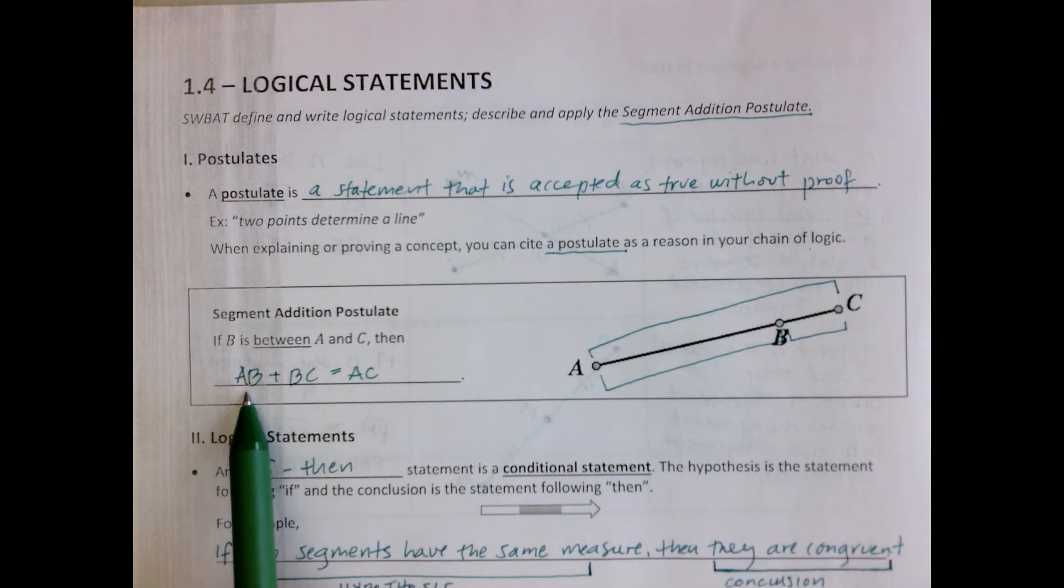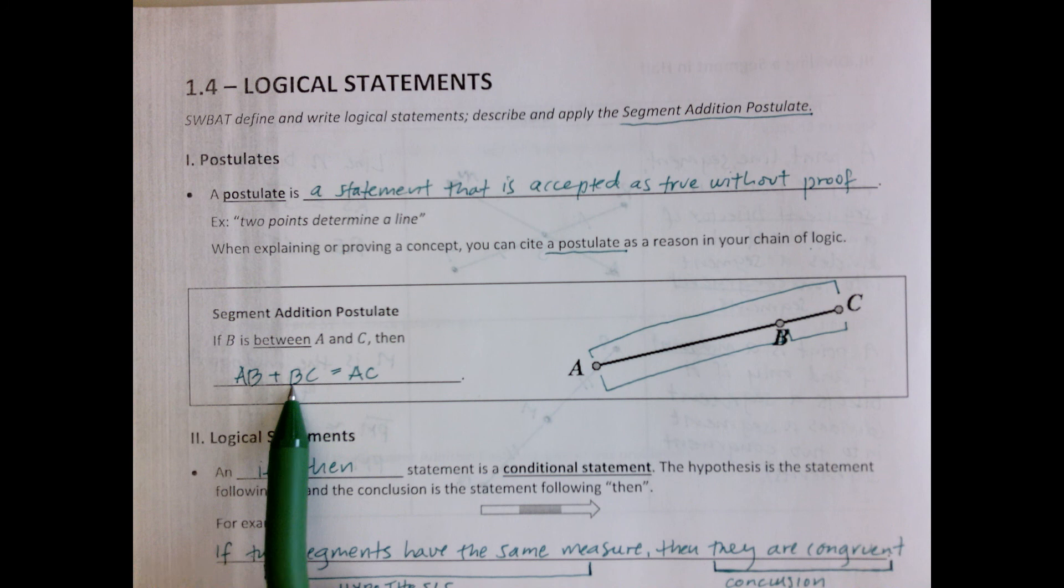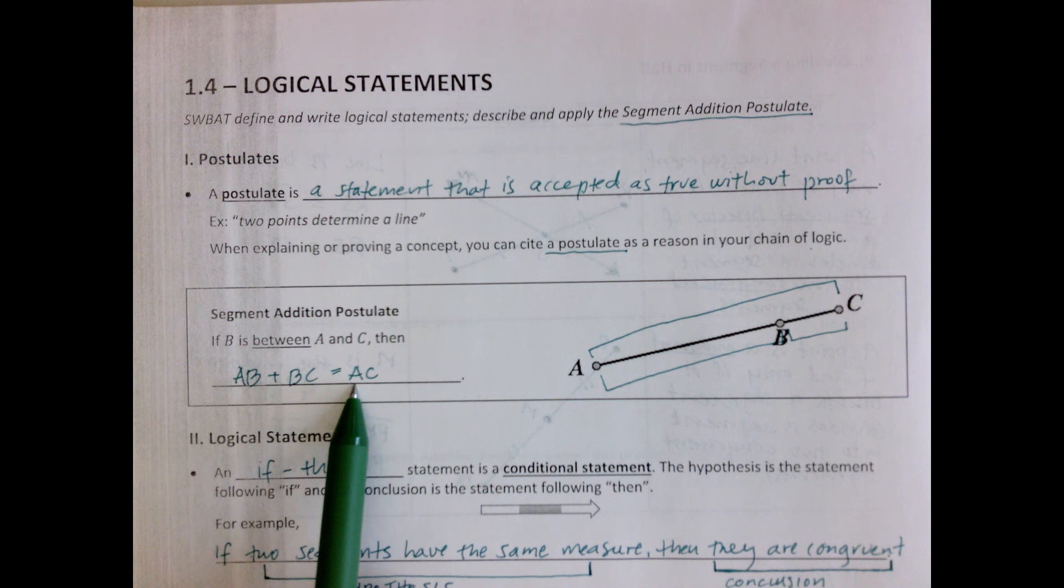So like it says here, and you're going to write that in your notes, if we take the length of AB, and I know that this means length because there's no notation over it, if you take the length of AB, add it to the length of BC, it will equal the length of AC.